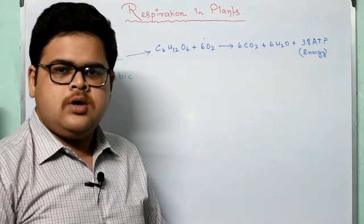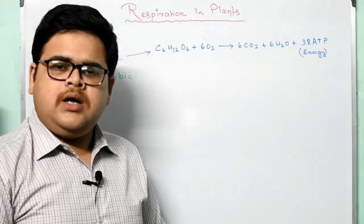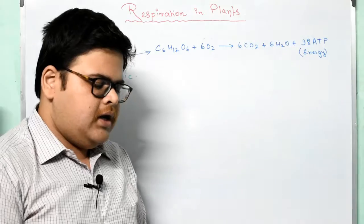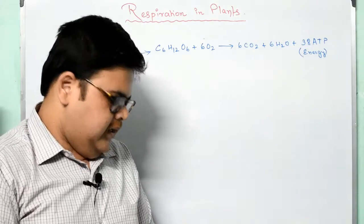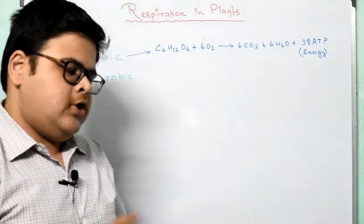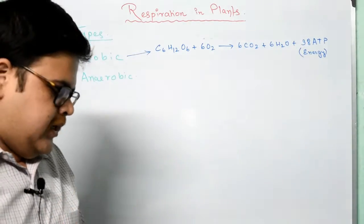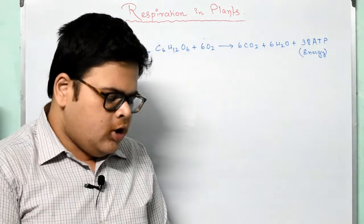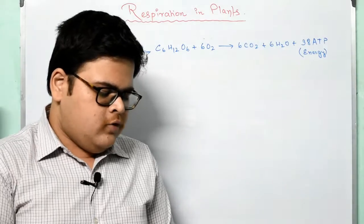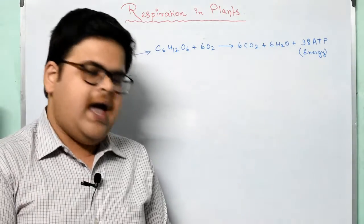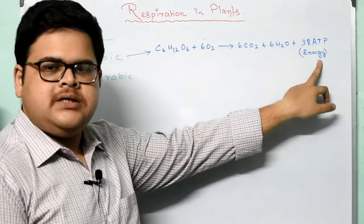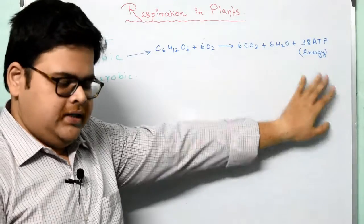Students, please follow your book, that is Concise Biology Part 1 Class 9. Please open page number 57. You will find the details there. Two kinds of respiration: one is aerobic respiration and another one is anaerobic respiration. In aerobic respiration, free oxygen is used and there is complete oxidation of glucose with the formation of carbon dioxide and water as end products, along with 38 ATP of energy, as we already learnt in the previous video lecture.